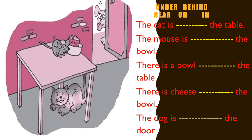First: the cat is ___ the table. Where is the cat? Yes, the cat is under the table. Second: the mouse is ___ the ball. Where is the mouse? The mouse is near the ball. Very good! Third: there is a bowl ___ the table.